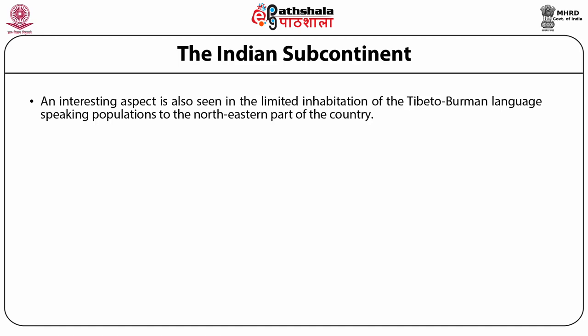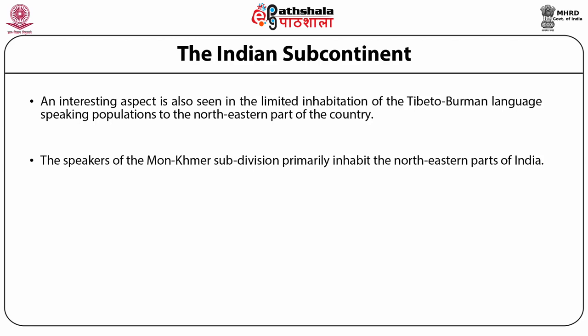Northern India has more speakers of the Indo-European language family. Tibeto-Burman language speaking populations are limited to the northeastern part of the country. Speakers of the Austro-Asiatic family belong to two divisions: the Mundari subdivision dwelling the eastern and central parts, and the Mon-Khmer subdivision primarily inhabiting the northeastern part. An important aspect of population stratification is also seen in religious groups like Muslim, Christian, Buddhism, Jainism, and migrant populations like Siddhis of African migrants, Parsis and Iranis.